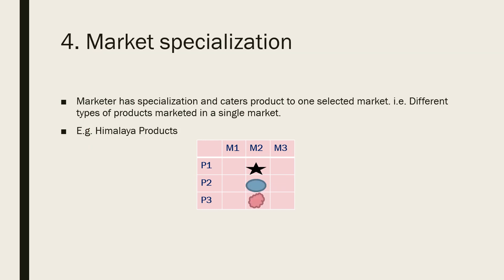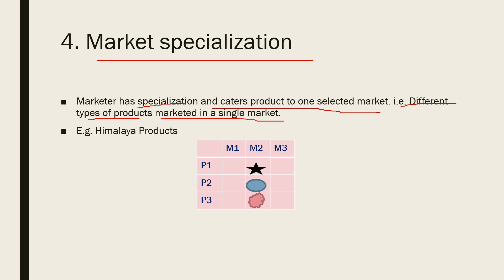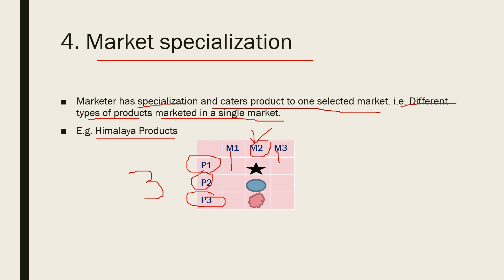Fourth is market specialization. The marketer has specialization and caters products to one selected market — that is, different types of products marketed in a single market. The marketer produces P1, P2, P3 — three types of products — and sells them in only one market. For example, Himalaya products: there are many types like shampoo, soap, scrub, face wash, etc., all marketed in only one market.